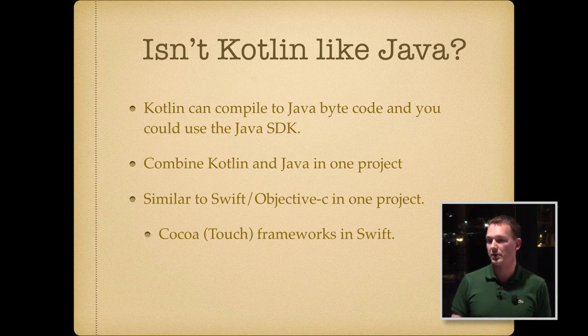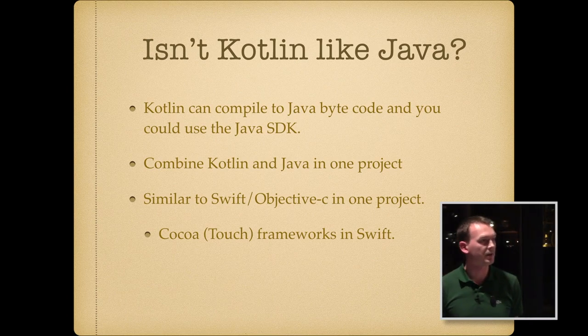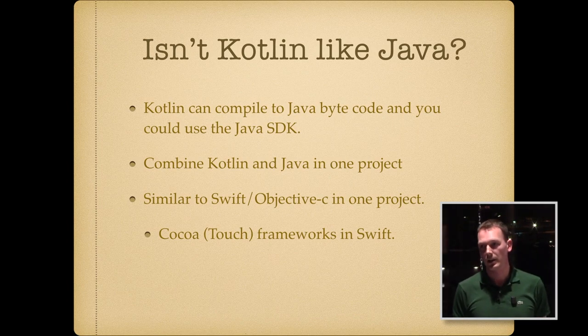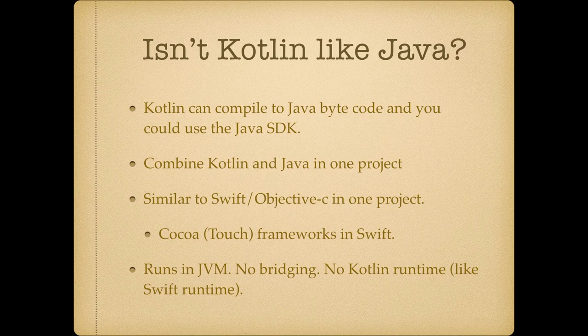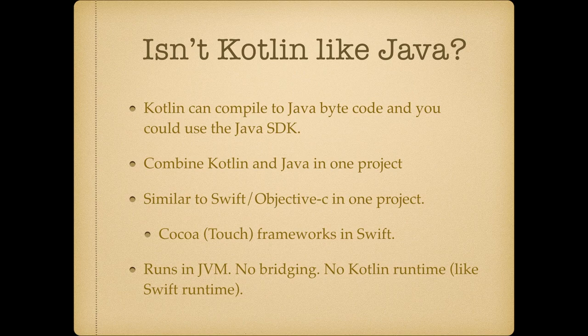In Swift you can use the Cocoa Touch libraries, which are not Swift-specific, but you can still use them. The difference is that Kotlin for Java actually compiles to Java bytecode, so it has one single runtime — the JVM. There's no bridging between the Kotlin code and the Java code; it all compiles to the same bytecode. That's a little bit different in Swift, where you do have a Swift runtime and bridging between Objective-C and Swift.